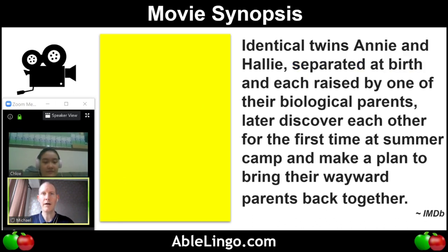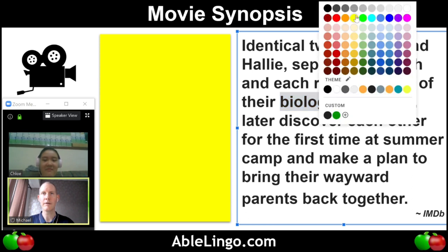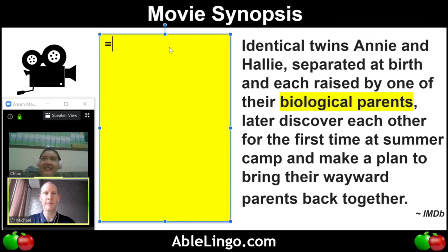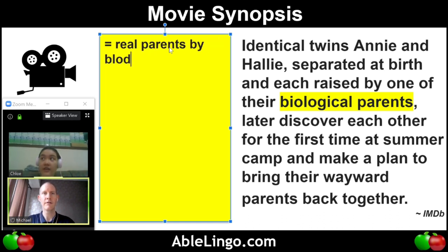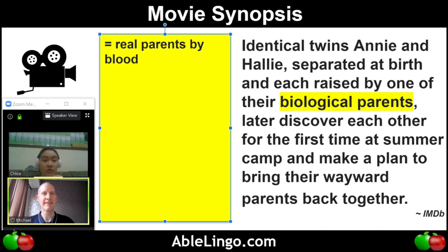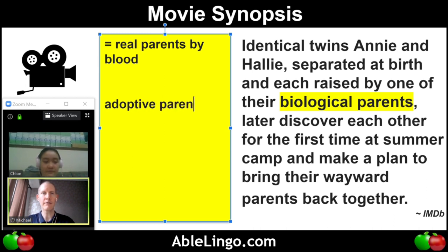So how about biological parents — what does that mean? Biological parents means real parents, by blood. For example, just say there's one kid, he's actually born, but then the parents don't want him. They put him into an orphanage and someone else adopts him, but they're not biological — they're adoptive. We would call those adoptive parents. So biological just means by blood.